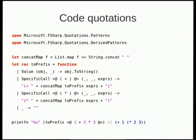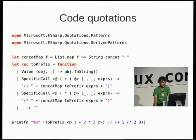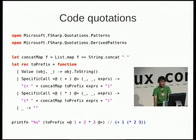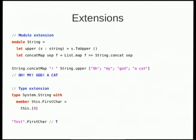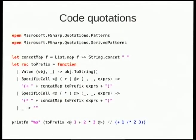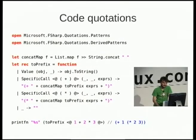Code quotations: down the bottom I've got '@' 1 plus 2 times 3 '@' — that's a quotation of F-sharp code. You can put any F-sharp code in there: a function call, anything. I pass that to the toPrefix function, which pattern matches on that quotation, sees a specific call to plus, and gives back a string in prefix form. It keeps doing that recursively until the result at the bottom is 'plus 1...' in prefix form. I've seen quotations used for database query languages — it takes F-sharp code, converts it into a query language, and passes it off to a database layer.